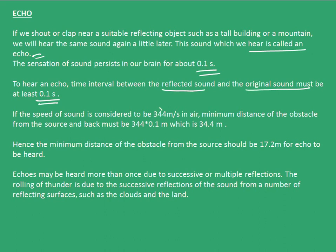If the speed of sound is considered to be 344 meters per second in air, the minimum distance of the obstacle from the source and back — that is, twice the distance — must be 344 into 0.1 meters, which is 34.4 meters. And hence, the minimum distance of the obstacle from the source, that is d, will be 17.2 meters for echo to be heard.